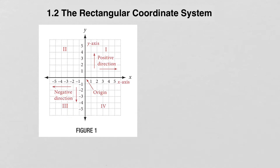In section 1.2, we look at the rectangular coordinate system. This should be a review for most of you. If you take the two-dimensional plane and divide it using two real number lines — a horizontal line and a vertical line — you get what we call a rectangular coordinate system.